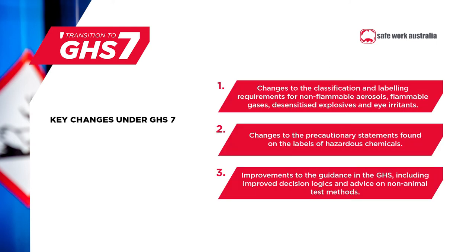There are three key changes to be aware of during the transition from GHS3 to GHS7. Firstly, there are changes to the classification and labelling requirements for some types of chemicals: non-flammable aerosols, flammable gases, desensitised explosives, and eye irritants. If you manufacture or import these chemicals, you will need to review the classifications and ensure that their labels and safety data sheets are updated. If you supply or use these chemicals, you should expect to see updated labels and safety data sheets in the supply chain over the next two years.